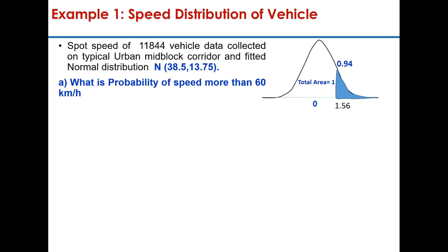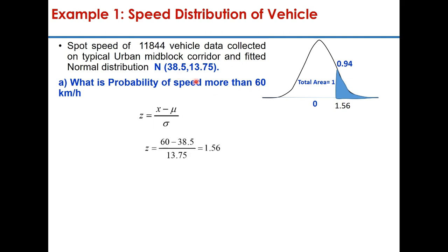It is extensively used in simulation studies in traffic and transportation engineering. For example, consider spot speed data of 11,844 vehicles where the mean is 38.5 km/h and the standard deviation is 13.75 km/h, and this data follows a normal distribution. The question is: what is the probability of speed being more than 60 km/h? You calculate the Z value: z = (60 − 38.5) / 13.75 = 1.56.